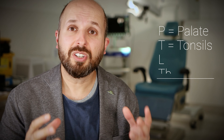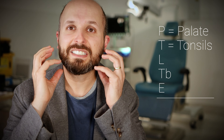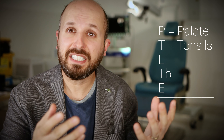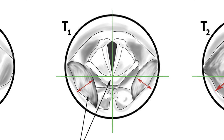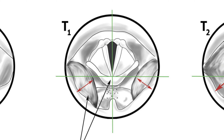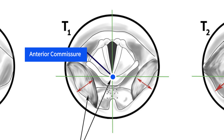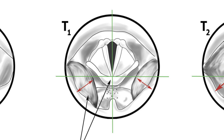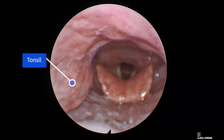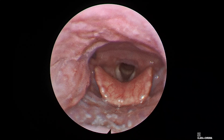Now we're moving on to the tonsil area. The tonsils are two areas of glandular tissue that sit on the side of your mouth and can often cause obstruction at the back of your throat. T0 basically means no tonsils at all or tonsils so small you can't see them. T1 is when you can see the tonsils but they take up less than 50% of the airway. To standardise this technique, place the tip of the flexible scope at the base of the uvula and centre it at the level of the anterior commissure. Using crosshairs at the anterior commissure — shown as green lines — makes it much easier to calculate whether tonsils are greater or less than 50% obstructing the airway. Here is a video of a T1 tonsil taking up less than 50% of the airway, with the uvula flapping between the two tonsils causing the snoring.